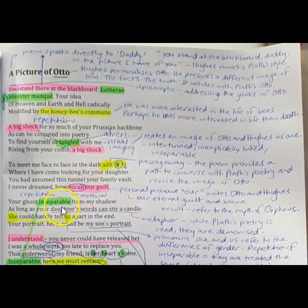They are united. They're inseparable is repeated. The personal pronouns we see of Otto and Hughes are indicating that there is eternal guilt and blame apportioned to them by Plath. Not only was it relevant and pertinent in the 60s when she wrote her poetry, but it still endures today and that they suffer as a result of the poetry.